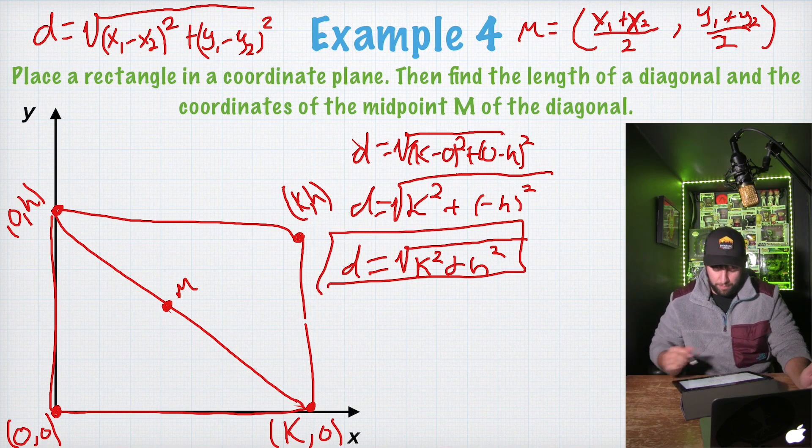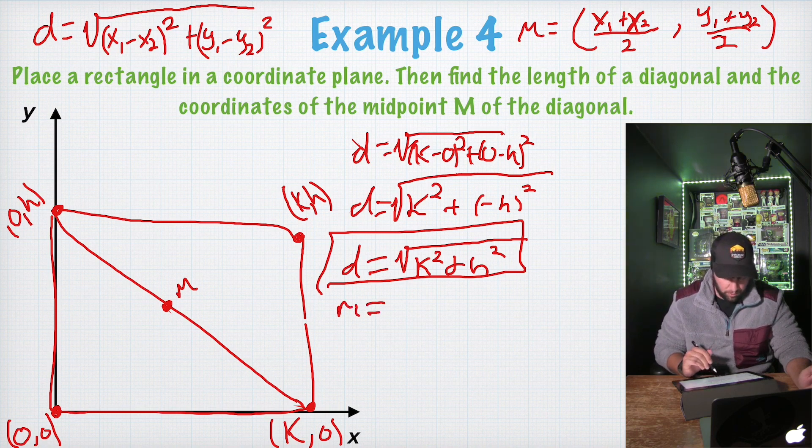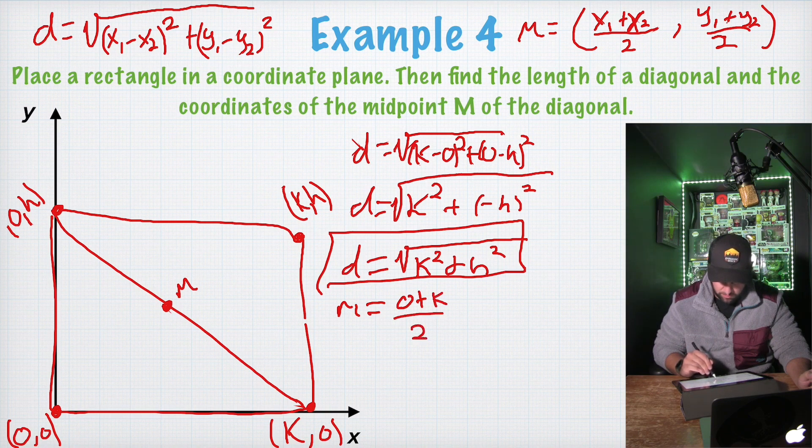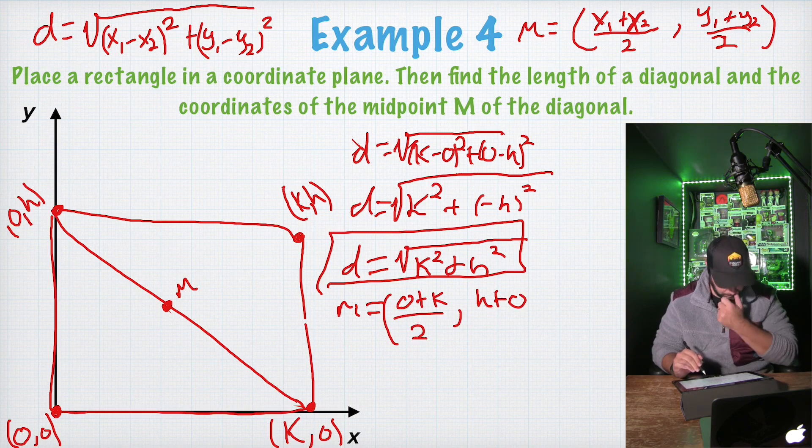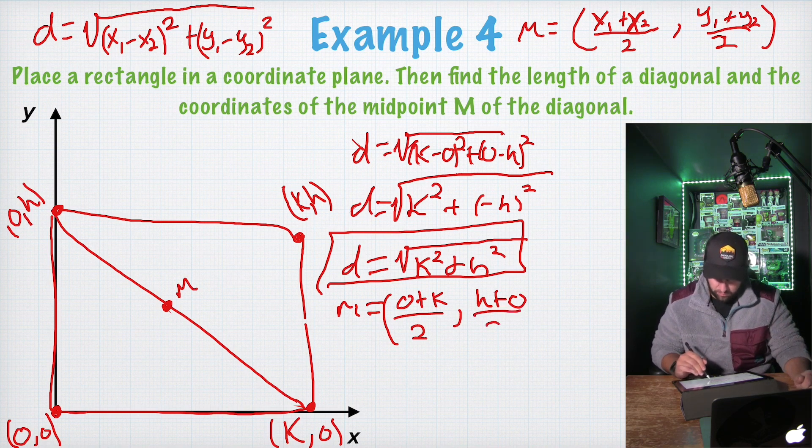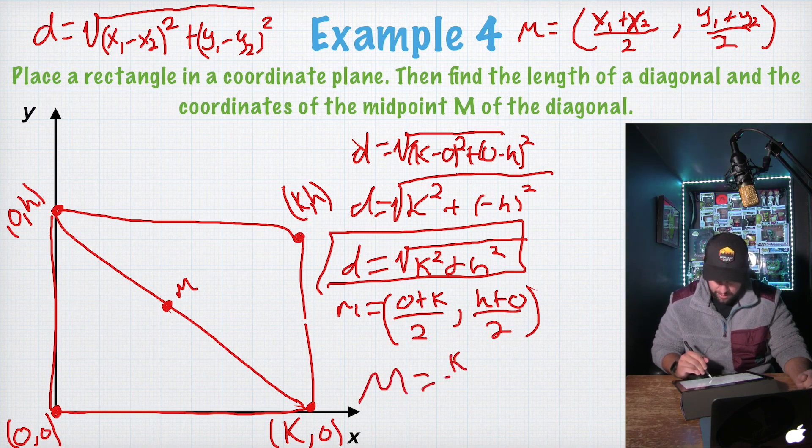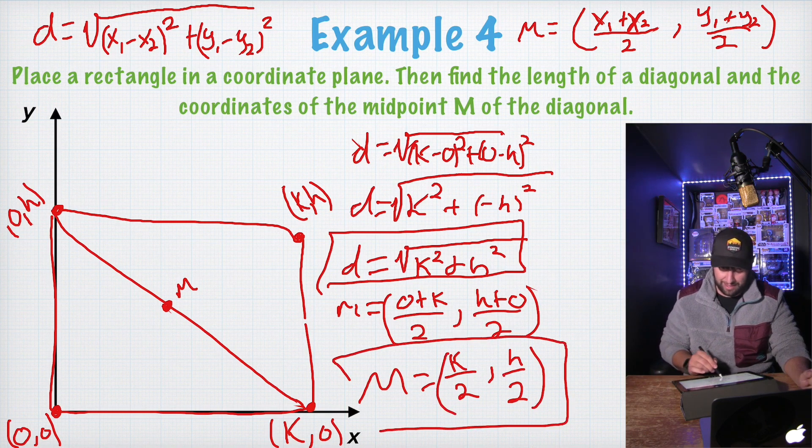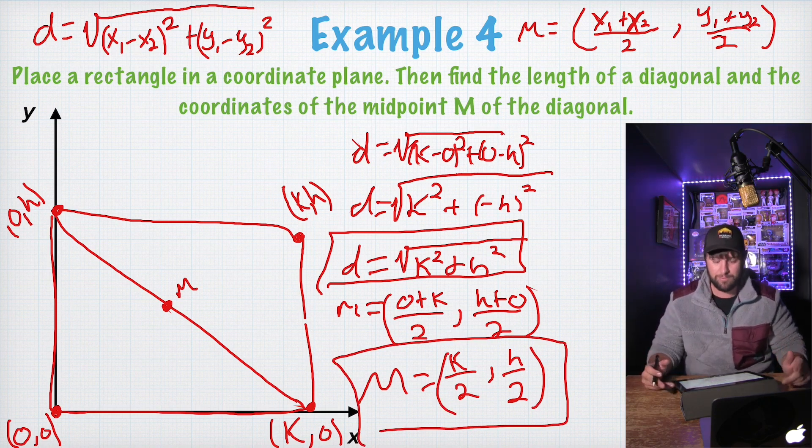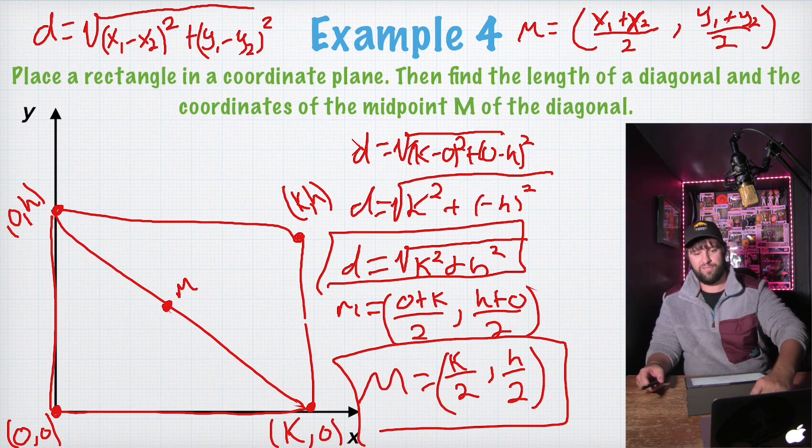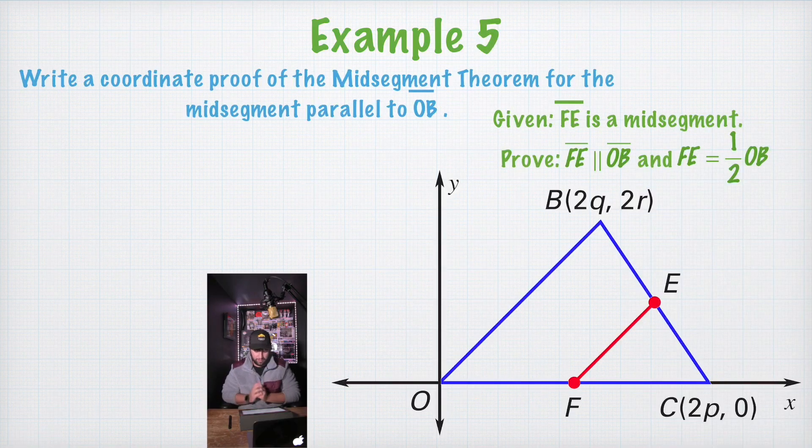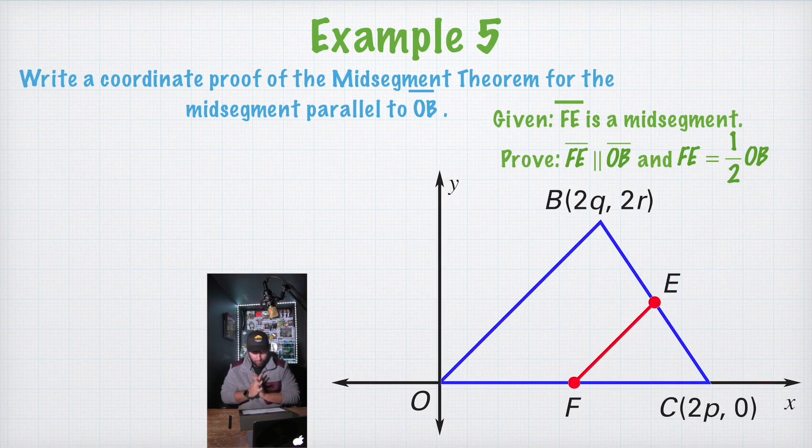And then for the midpoint, M is going to equal, once again, X's added together. So zero plus K over two and our Y values is going to be H plus zero over two, which our midpoint is going to equal K over two comma H over two. And that is our midpoint. And that's it. That's all you have to solve it. You're not looking for number value problems. That's what doing a coordinate proof kind of looks like. I'm actually going to do a coordinate proof in example five.